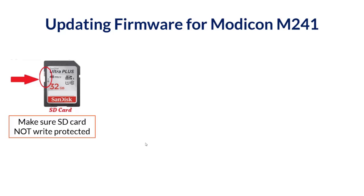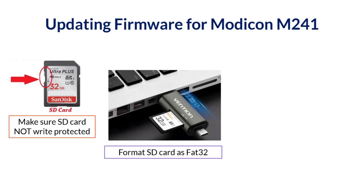Before making the firmware update, we need to follow these steps. First, as mentioned, we need to format an SD card to FAT32. Make sure the SD card is not in write-protection mode — there is usually a small switch with two positions: one for write protection and one to unlock it. Make sure it is in the unlocked position before formatting. Then format it to FAT32. Depending on your PC or laptop, some have built-in SD card sockets for direct insertion.